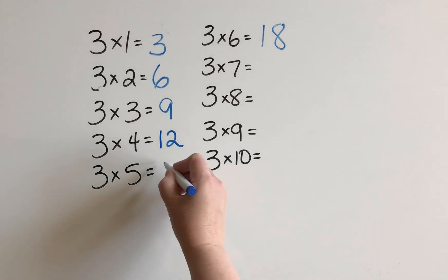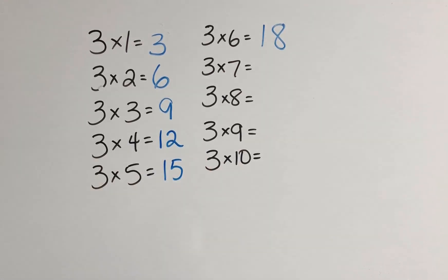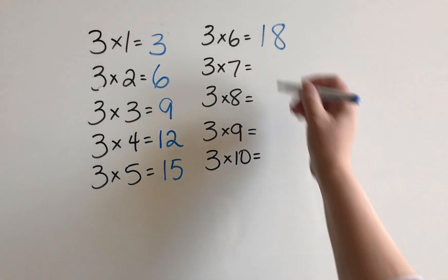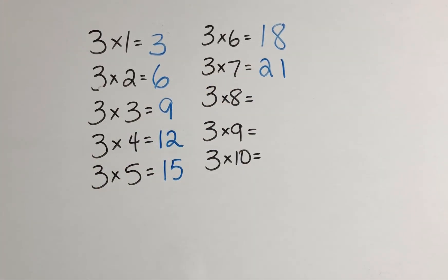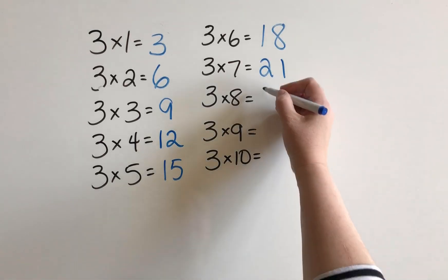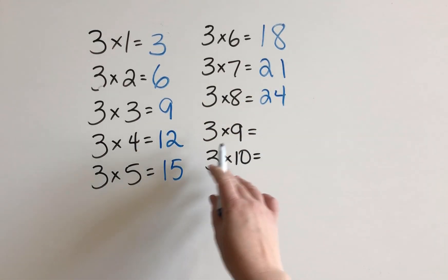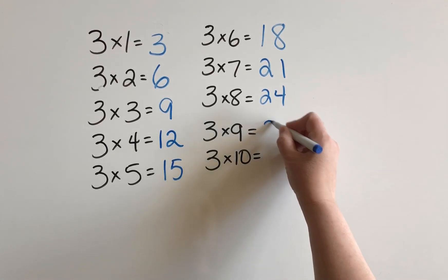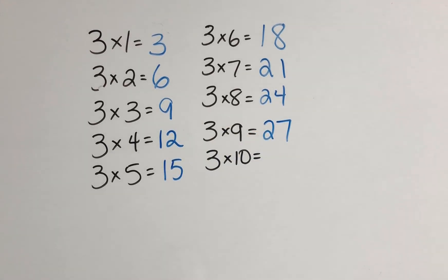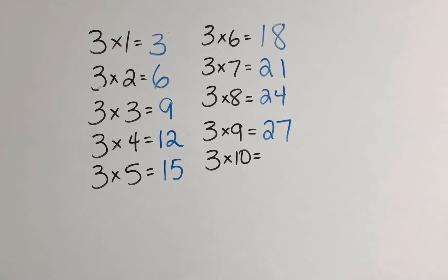For three times seven, the double of seven is fourteen, and then one more group of seven makes twenty-one. For three times eight, the double of eight is sixteen, and one more group of eight makes twenty-four. For three times nine, the double of nine is eighteen, and one more group of nine makes twenty-seven. And for three times ten, the double of ten makes twenty, and one more group of ten makes thirty.